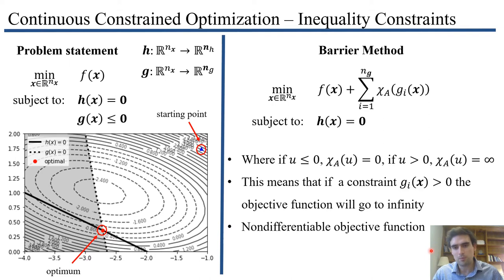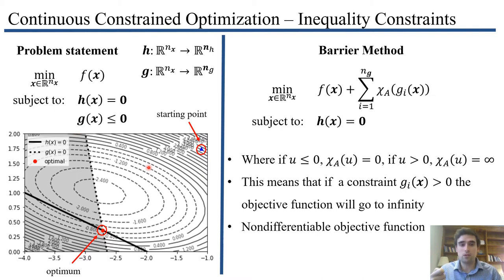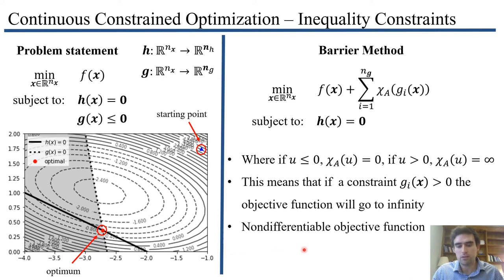There are several problems with this function. One is that it's not differentiable. Another is that we don't know how close we are to feasibility. Once you have a solution, in theory you don't care how close or far you are from the constraint boundary — as long as you're feasible, all solutions are equally good. But when trying to find a solution, knowing how close you are to feasibility is quite a nice property to have, to know which direction to go.